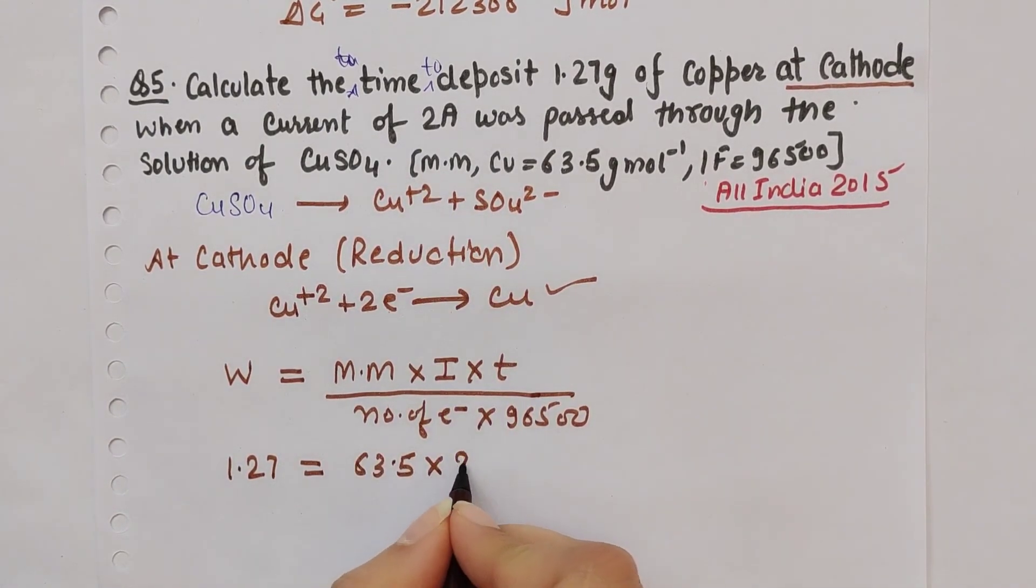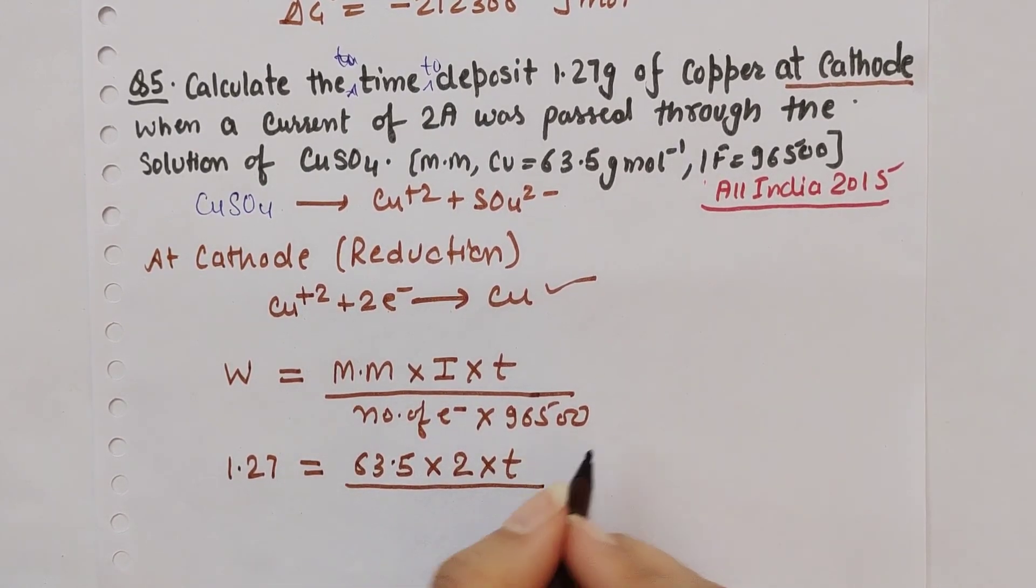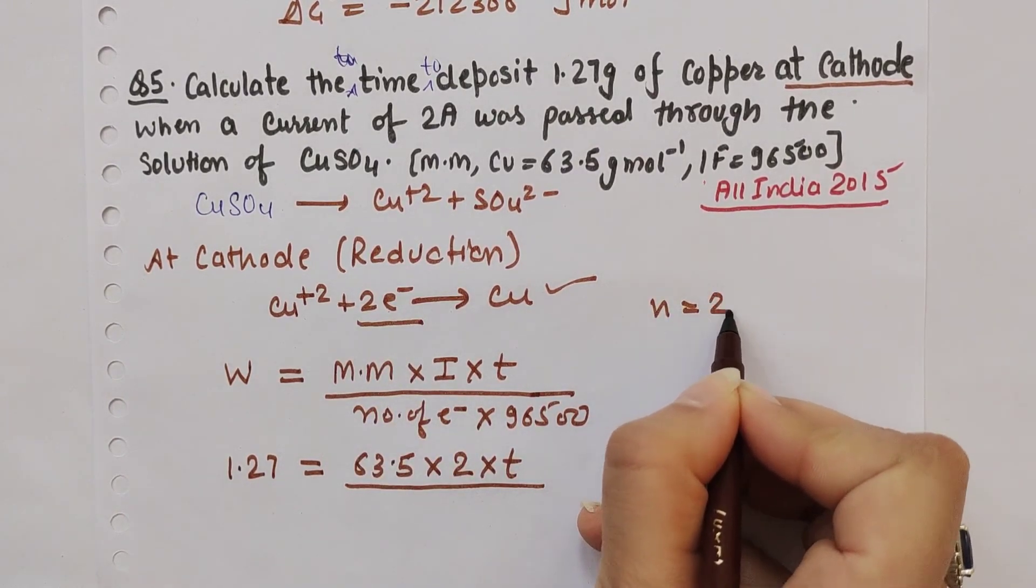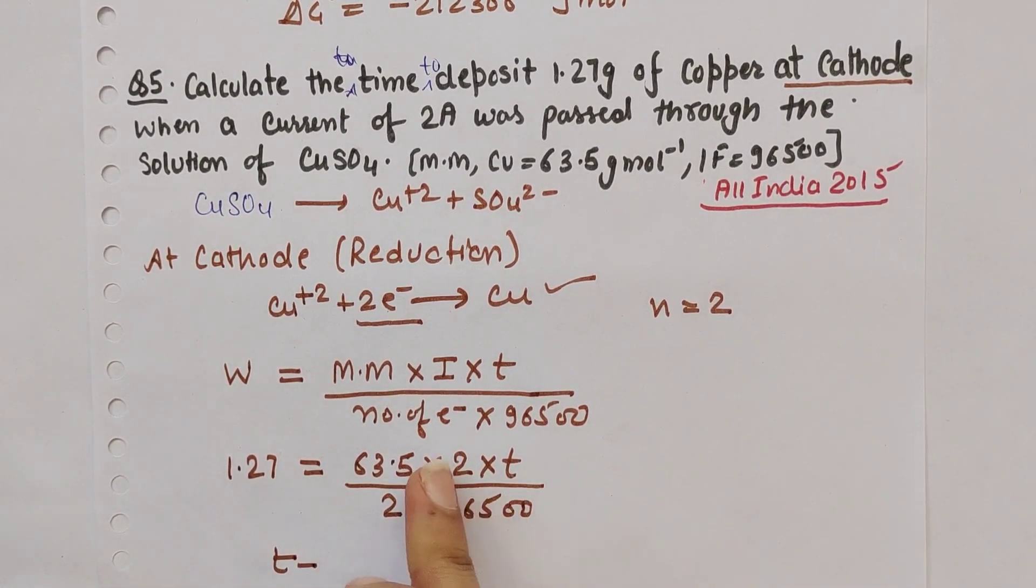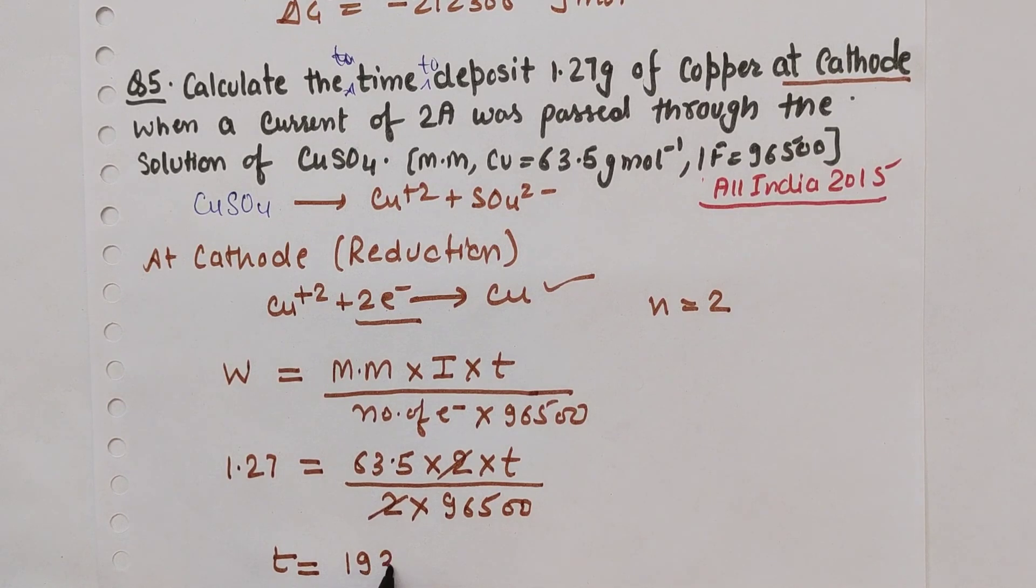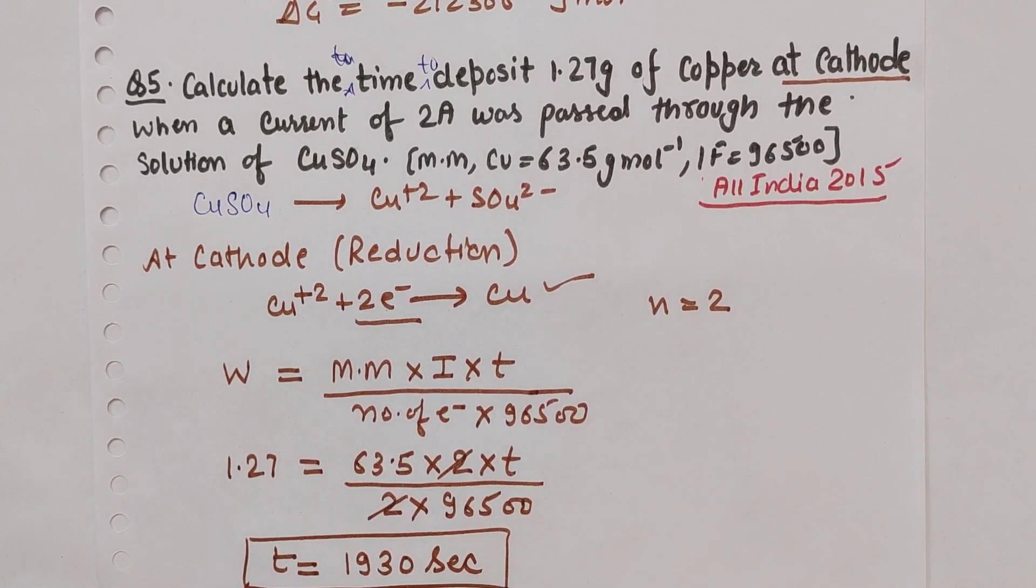Rearranging for time, the 2's cancel out and we get t = 1930 seconds. This is our answer for the time required.